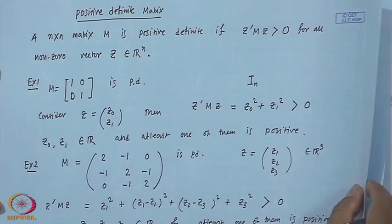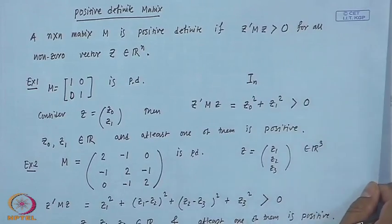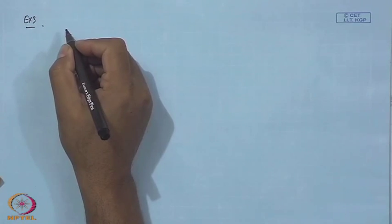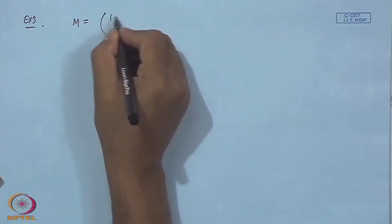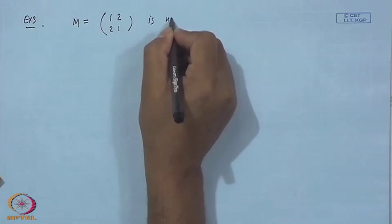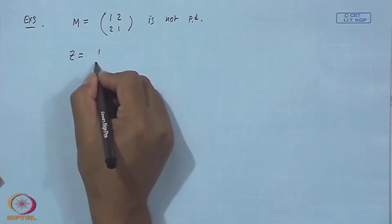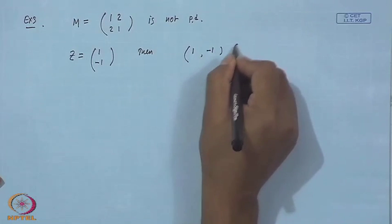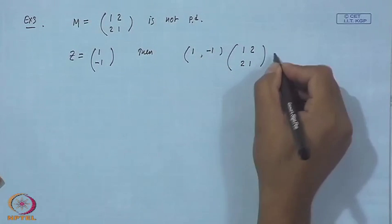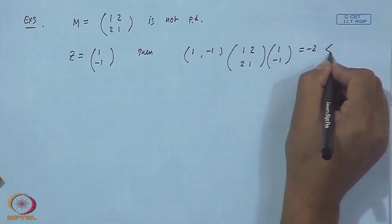You might think that if there are positive terms in the matrix, then it is positive definite. Example 3: Take the matrix M = [[1,2],[2,1]] — all positive entries — but this is not positive definite because if you take non-zero z = [1, −1], then z'Mz = [1,−1]·[[1,2],[2,1]]·[1,−1] = −2, which is less than 0. So this is an example of a matrix which is not positive definite.